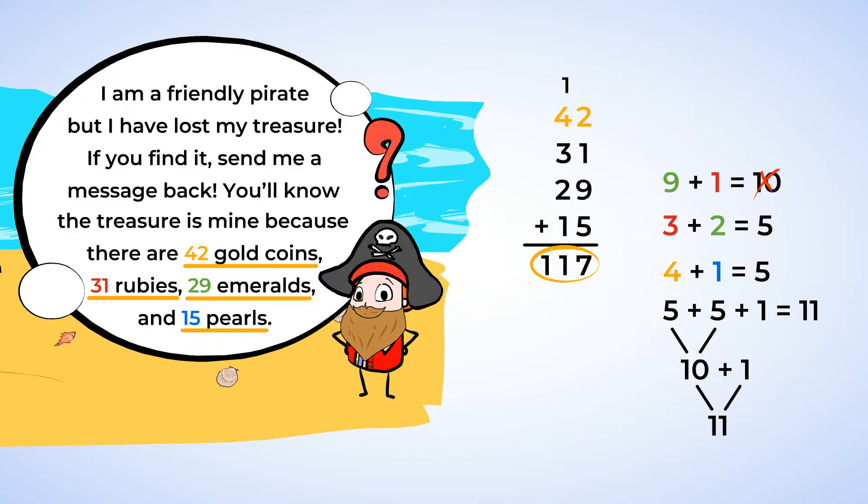So, 42 plus 31 plus 29 plus 15 is 117. The pirate lost 117 pieces of treasure in all. I hope he finds them.